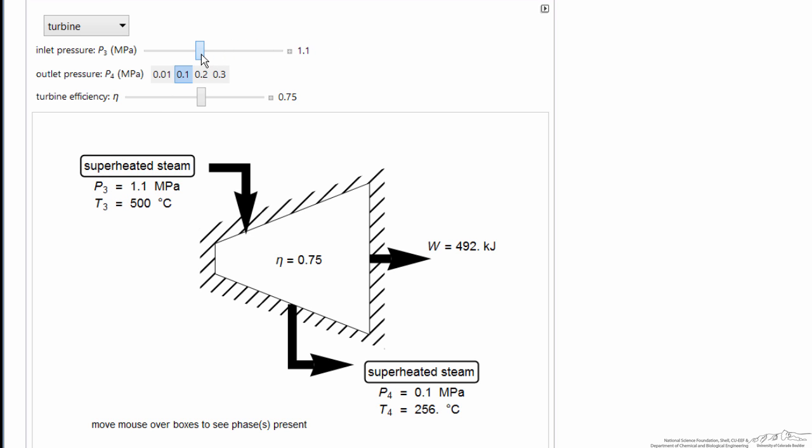So as we change the pressure here, we're changing the inlet pressure, and that, of course, changes how much work. As we go to higher pressure, we get more work out of the turbine.